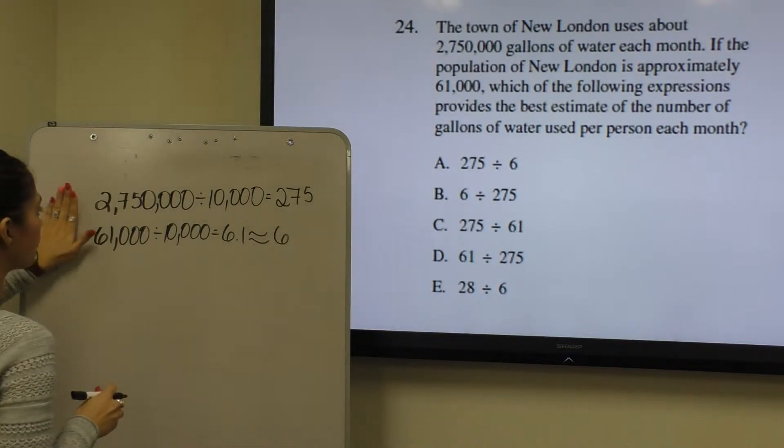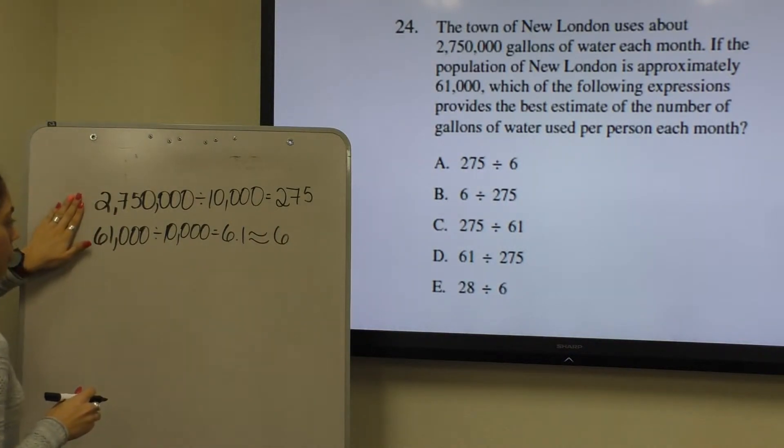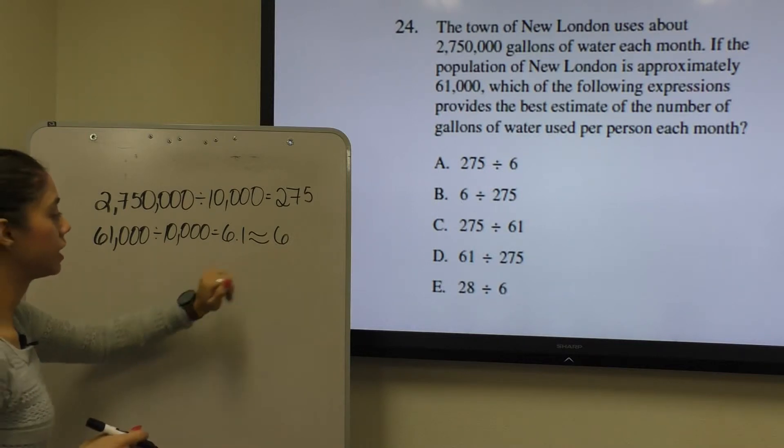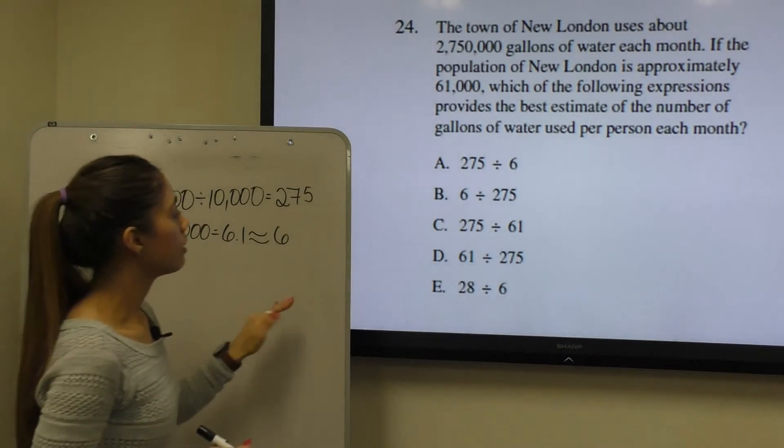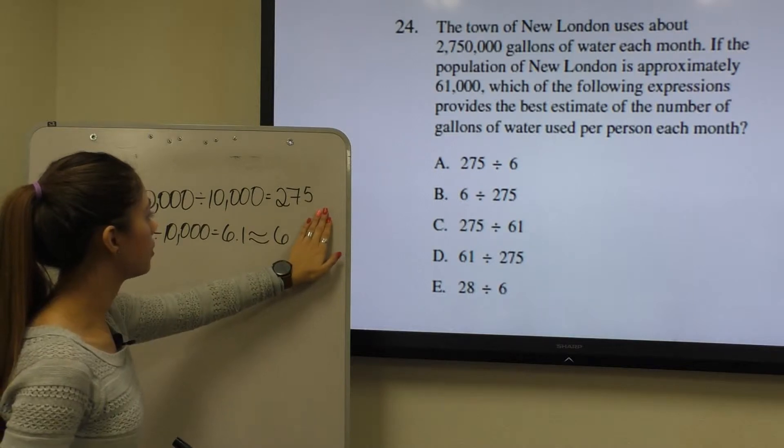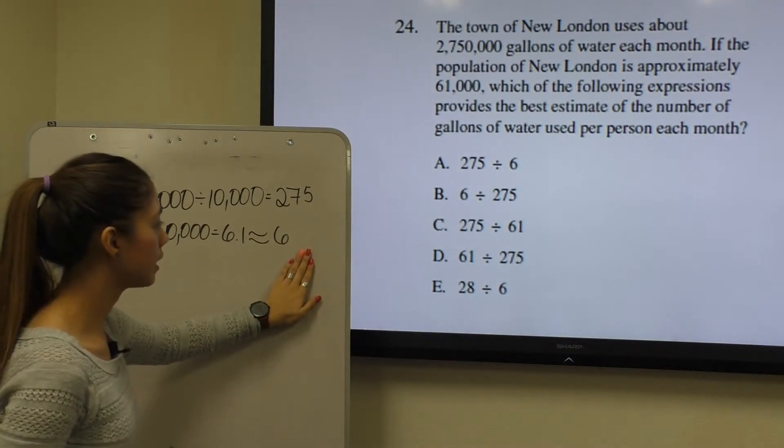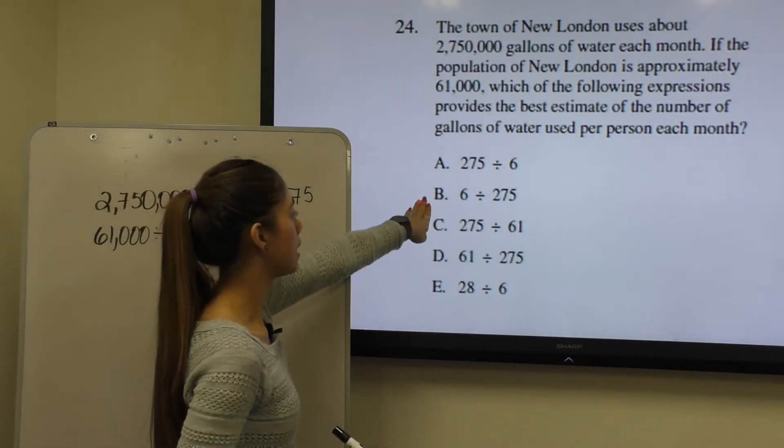So the greatest number that both of these could have been divided by was 10,000 in order to not have any decimals. We did get 6.1, but we can round that off to 6. So we can see that the only answers that use 275 and 6 would be A and B.